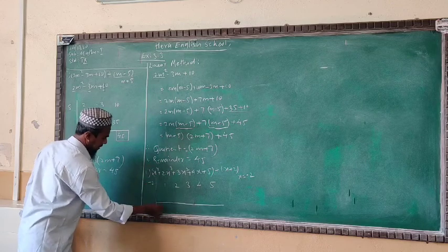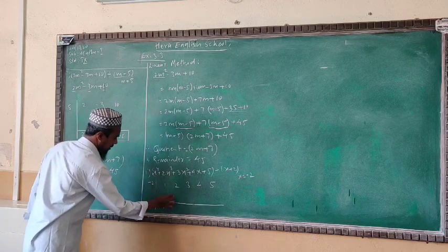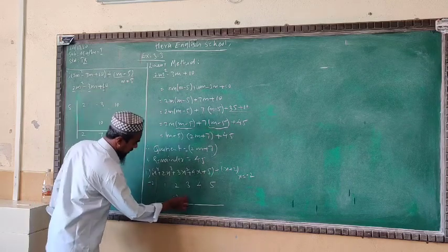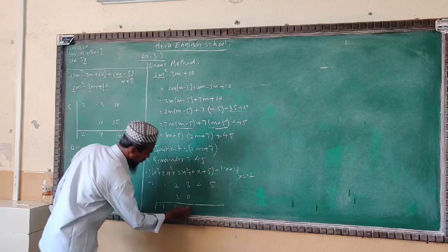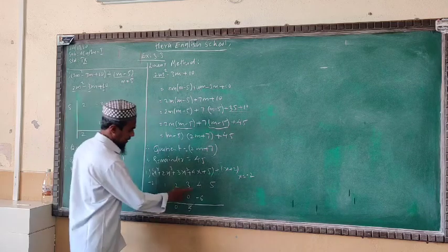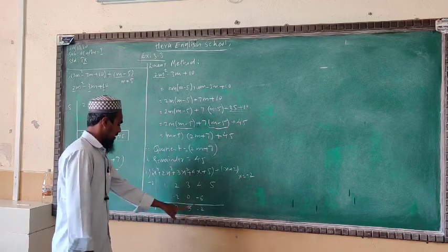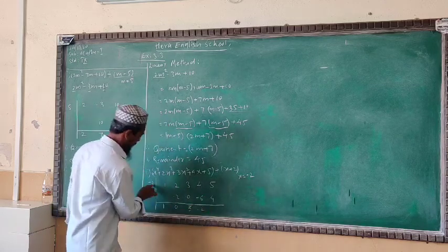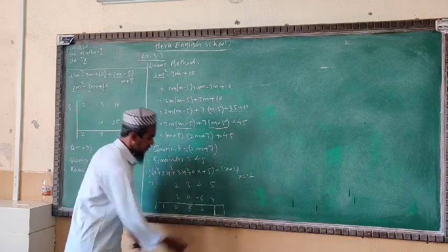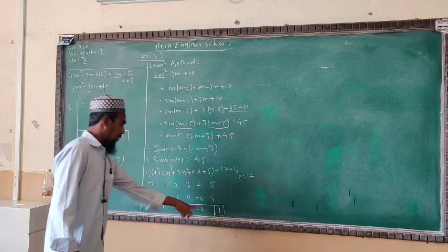Now perform the synthetic division. Bring down 1. Then 1 times minus 2 is minus 2; 2 plus minus 2 gives 0. Then 0 times minus 2 is 0; 3 plus 0 gives 3. Then 3 times minus 2 is minus 6; 4 plus minus 6 gives minus 2. Then minus 2 times minus 2 gives plus 4; 5 plus 4 gives 9. The value 9 in the last box is your remainder.